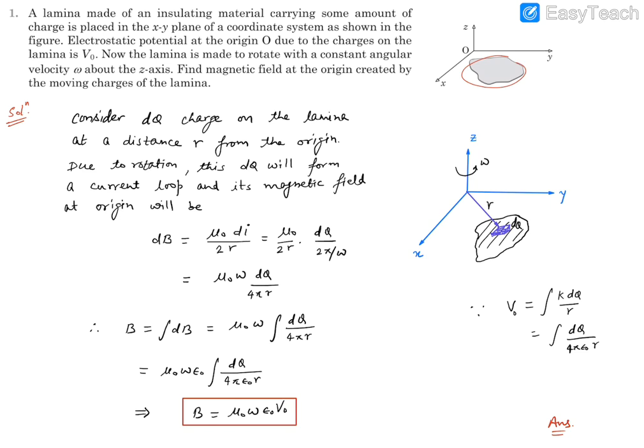This lamina, a two-dimensional object which is charged, is placed over here. Further, it reads: electrostatic potential at the origin due to the charges on the lamina is V₀. So here is the charge distribution, aerial charge distribution, and this entire charge, let's say total charge is Q. It will have a potential at origin as V₀.